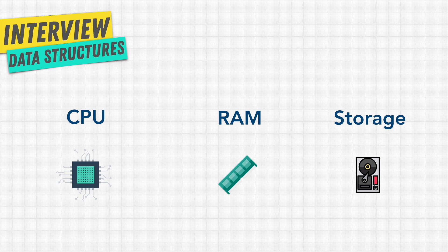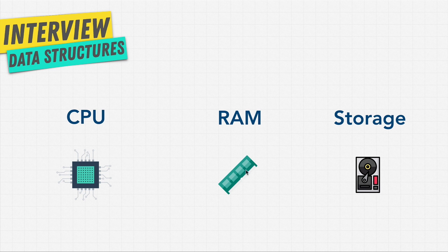So why wouldn't we just always use storage so we don't lose any data? Well, the problem is that persistent storage is slow. A computer is run by its CPU — you can think of the CPU as the little worker that does all the calculations we need. It does the actual work inside our computer, and this CPU needs access to both RAM and storage, but it can access RAM and the information in it a lot faster.